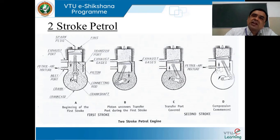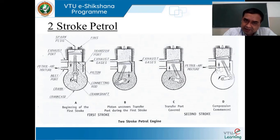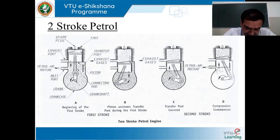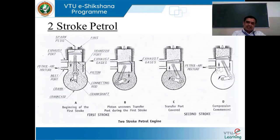Regarding the crankcase: normally in four-stroke engines, although the crankcase is closed, it will not be hermetically sealed. But when we refer to two-stroke engines, the charge is admitted into the crankcase since it is hermetically sealed. Please remember: in four-stroke engines the crankcase shall not be hermetically sealed, but in two-stroke engines that shall be mandatory.